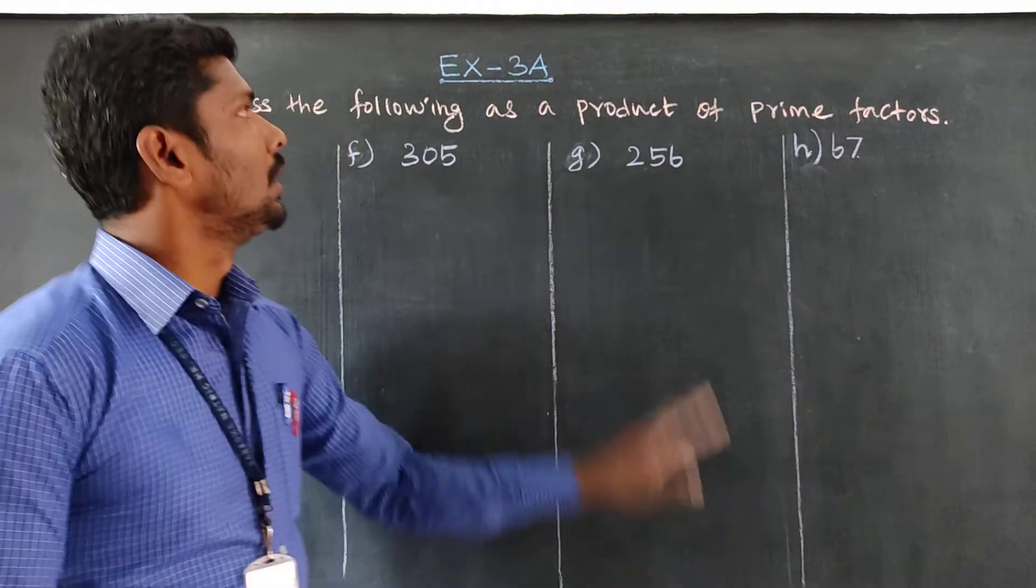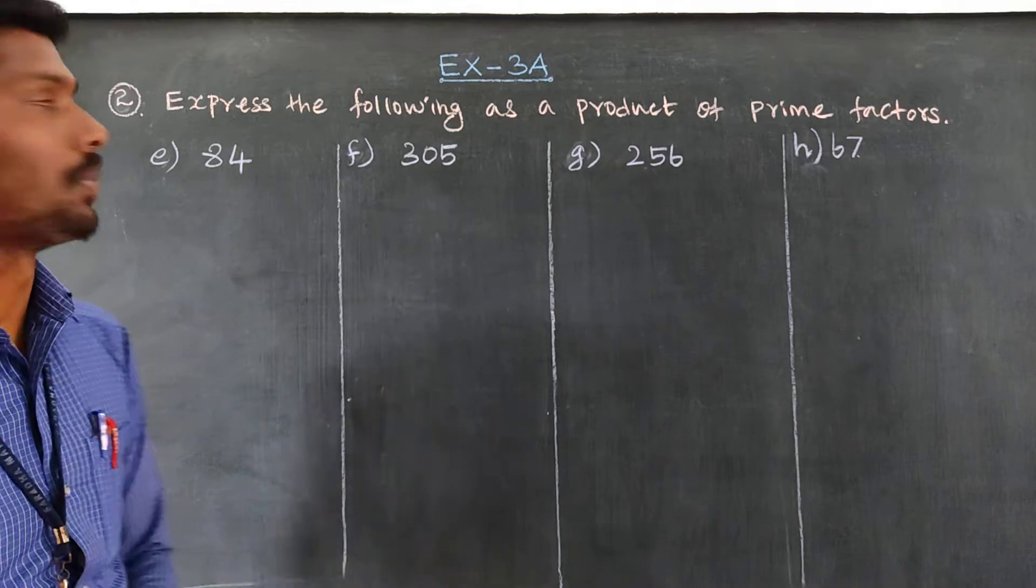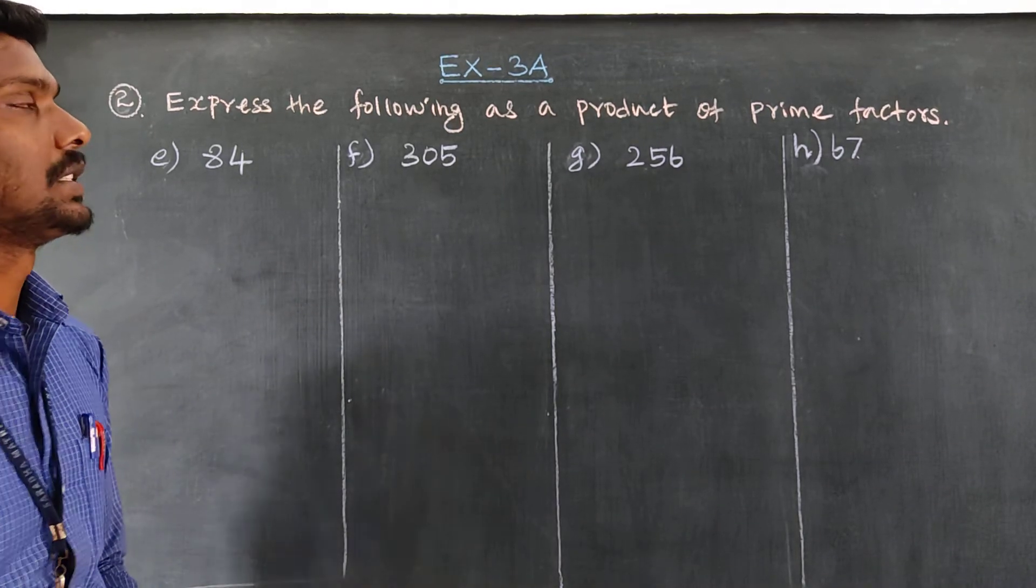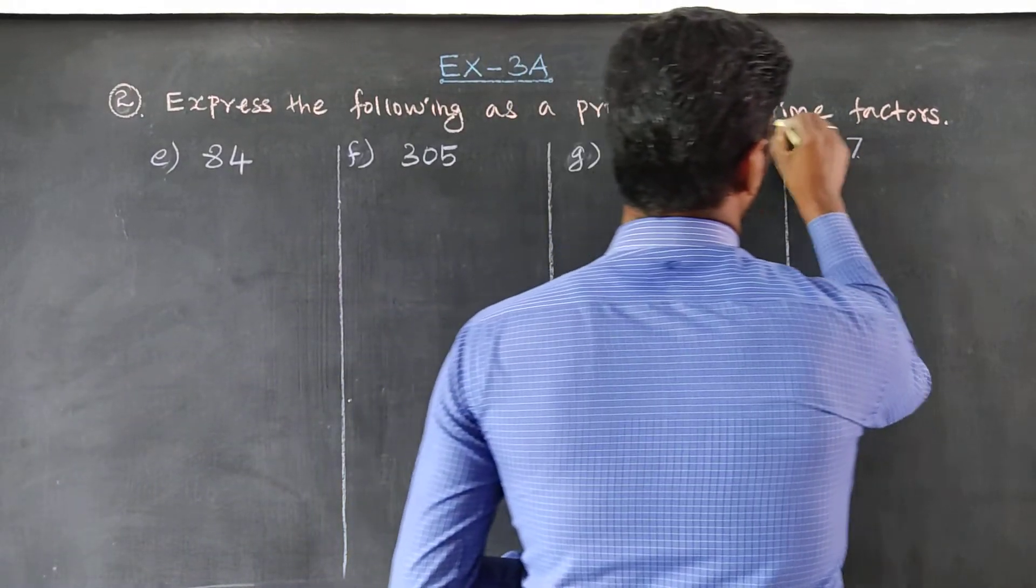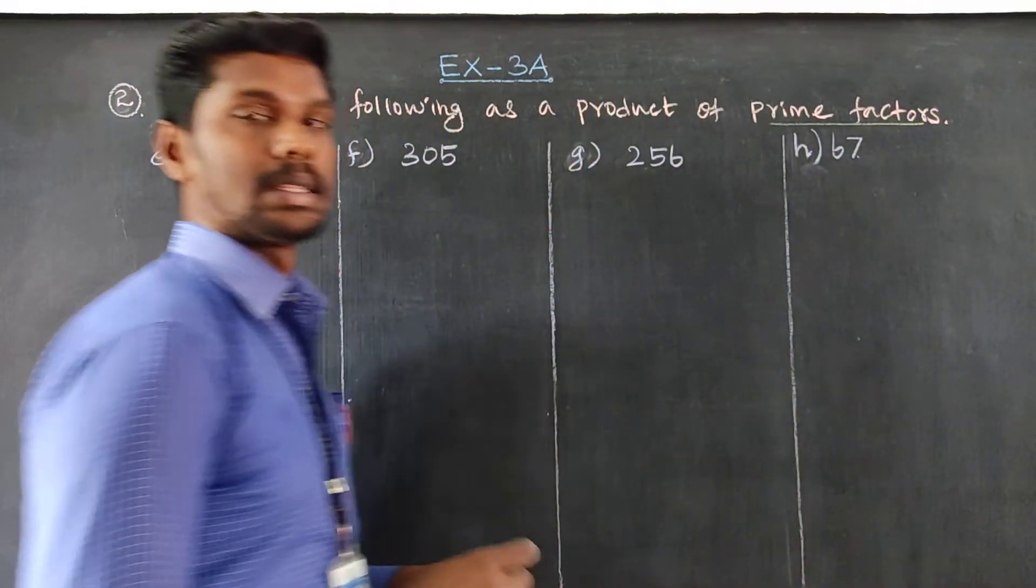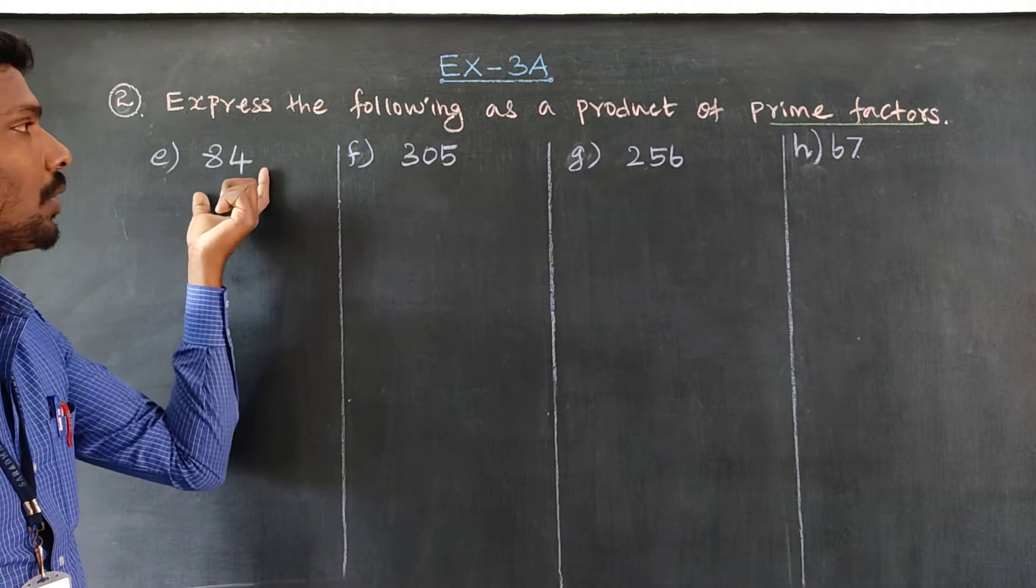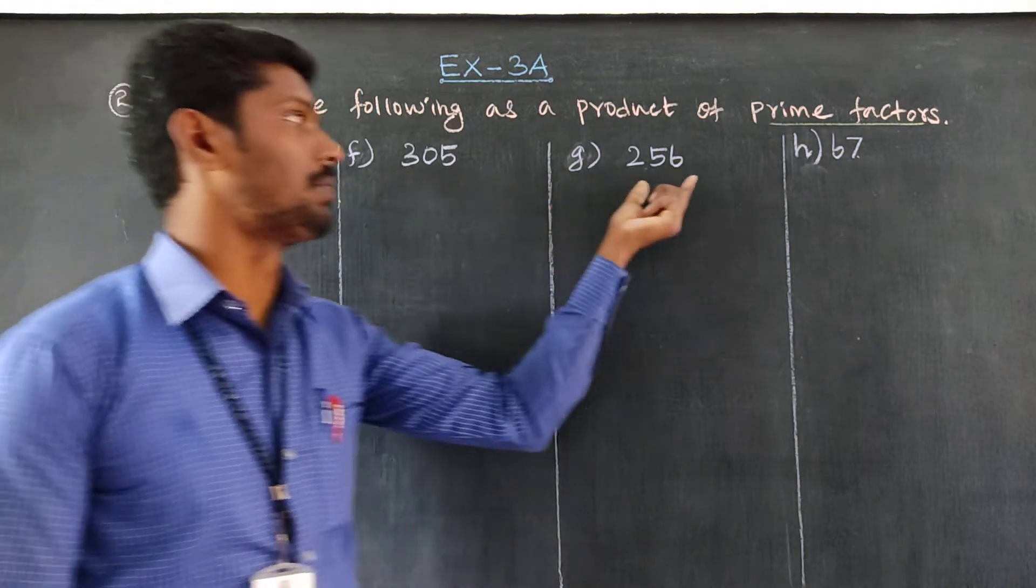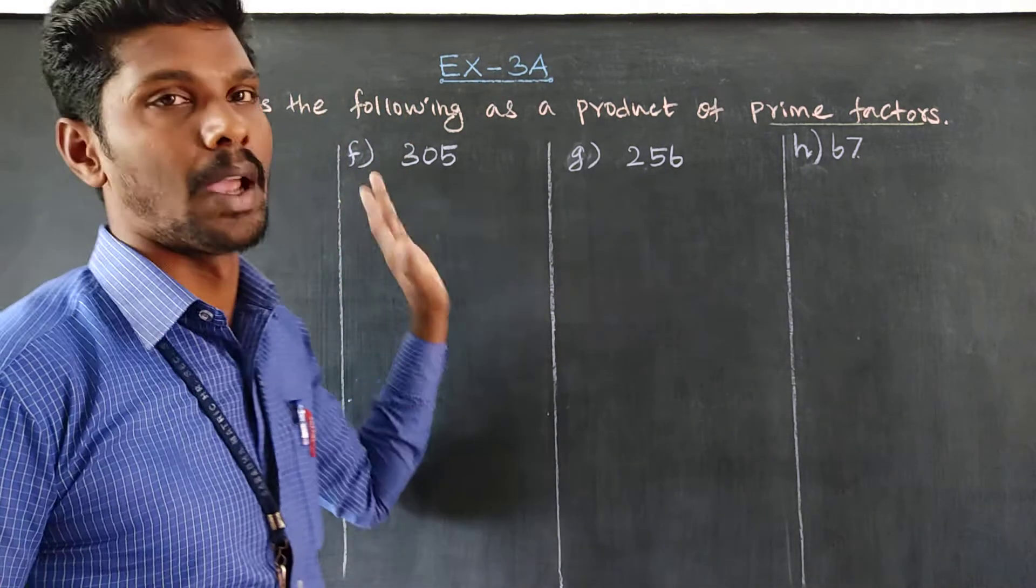Hey student, Exercise 3A, Question number 2, parts e, f, g, h. Express the following as a product of prime factors: first number 84, number 305, 256, and 67.